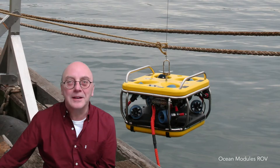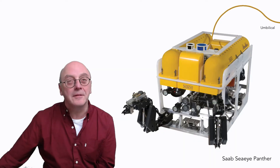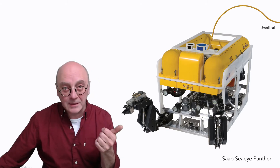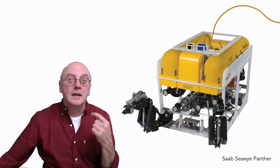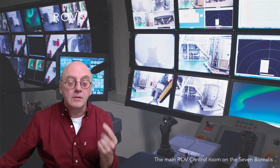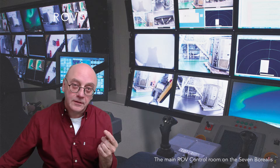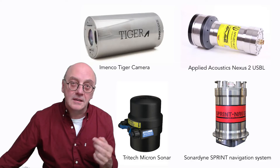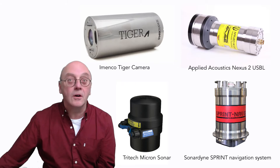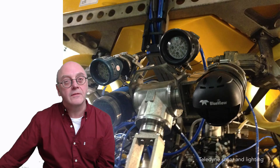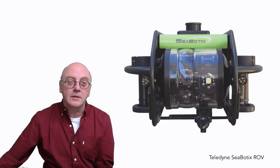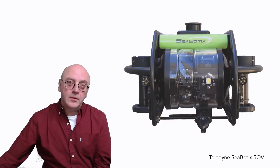ROVs are self-propelled underwater vehicles that are linked to the surface by an umbilical. The umbilical is used to get power down to the vehicle to operate it, to get control signals from the pilots to manoeuvre the vehicle in real time, and to send data from the sensors and instruments on the ROV up to the surface. So when you hear the words 'subsea robot,' this is the sort of thing we're talking about.